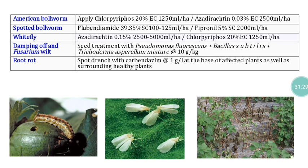Apart from bollworms, there is also a problem of whiteflies, which are sucking pests that transfer viruses. Diseases such as wilt and root rot also cause problems in cotton. To control these diseases, suitable biocontrol agents like Pseudomonas, Trichoderma, and Verticillium are applied to manage disease incidence effectively.